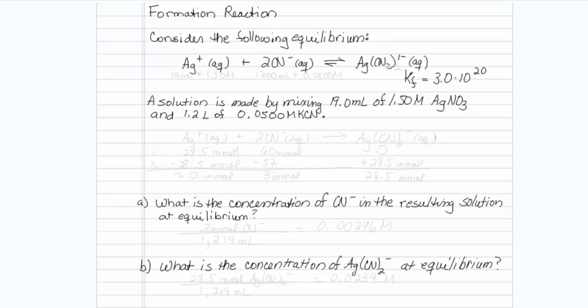So let's see. For the silver, I have 19 mL times 1.50 molar. For the cyanide, I guess we'll do this in millimoles. I have 1200 milliliters times 0.0500 molar.